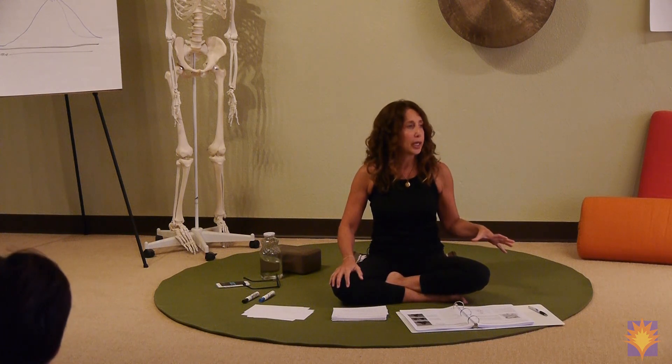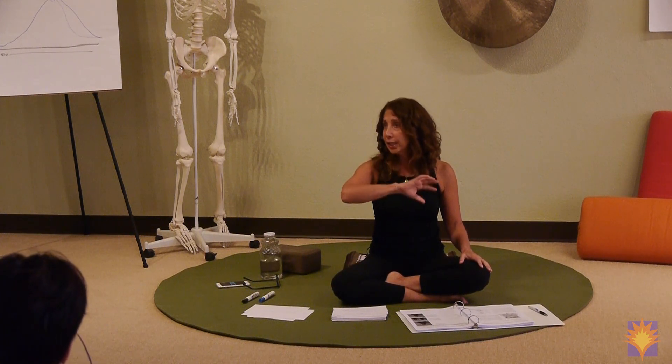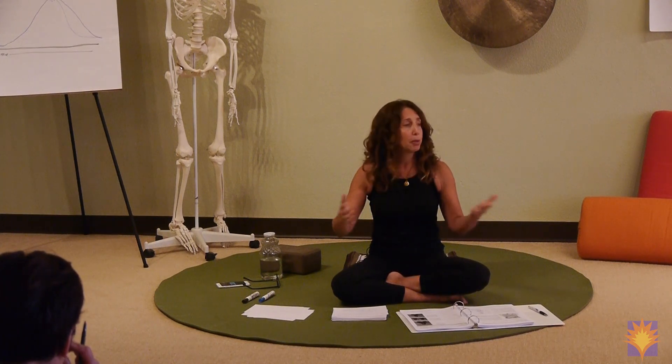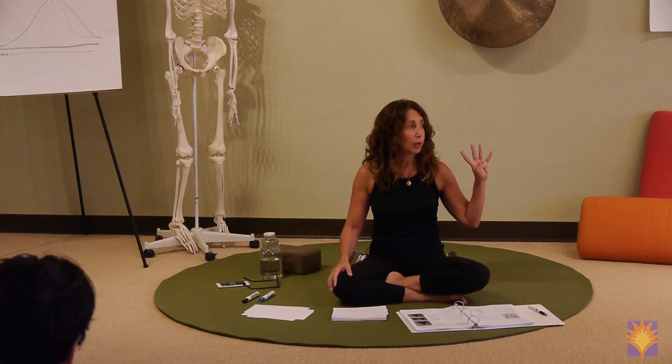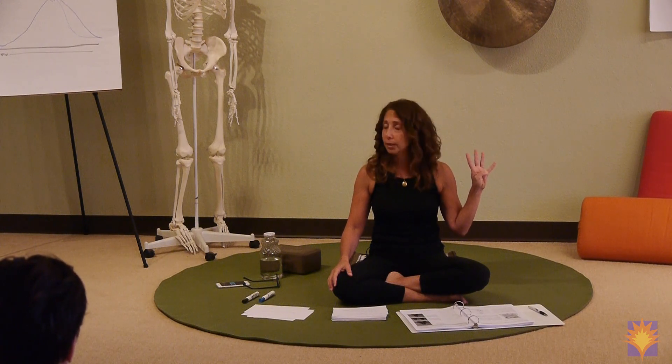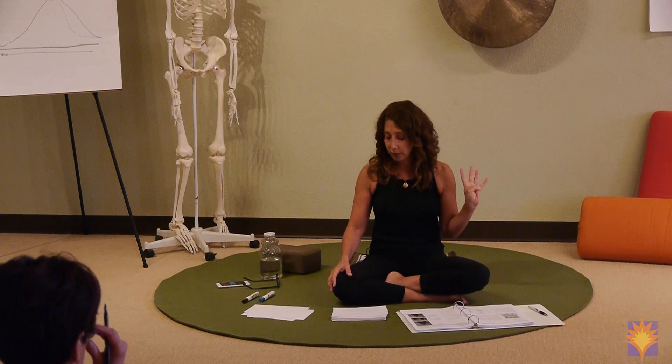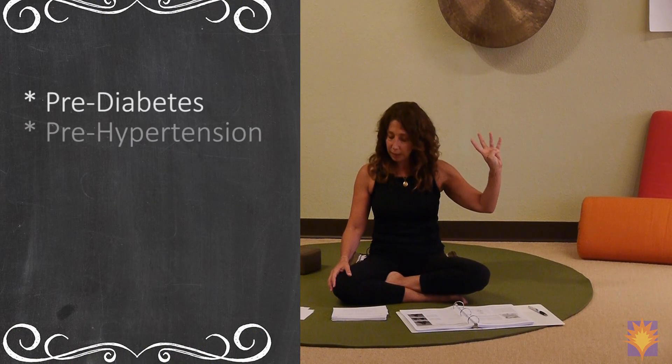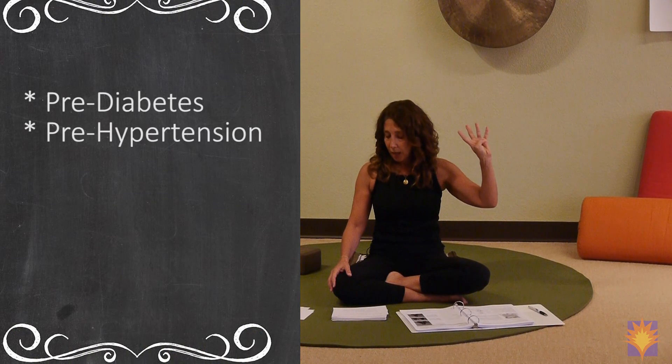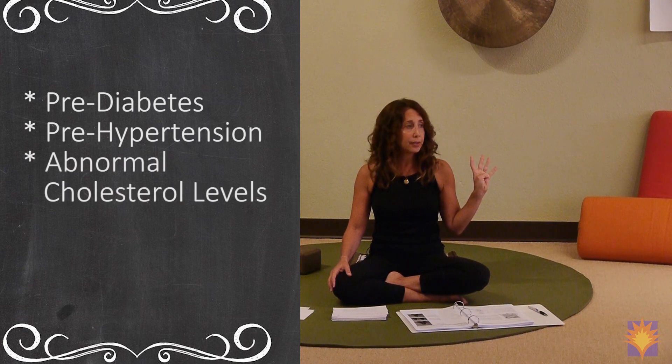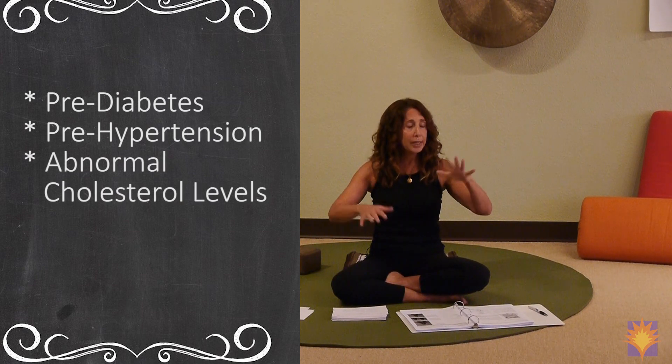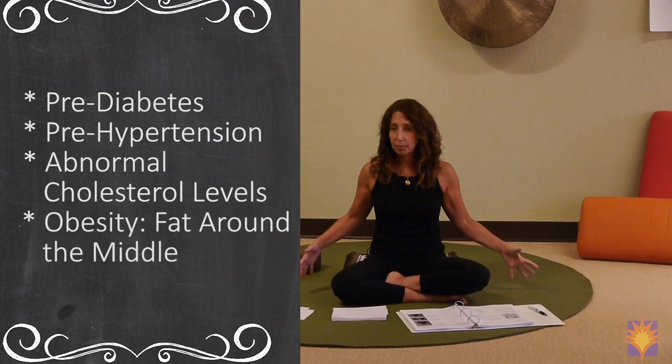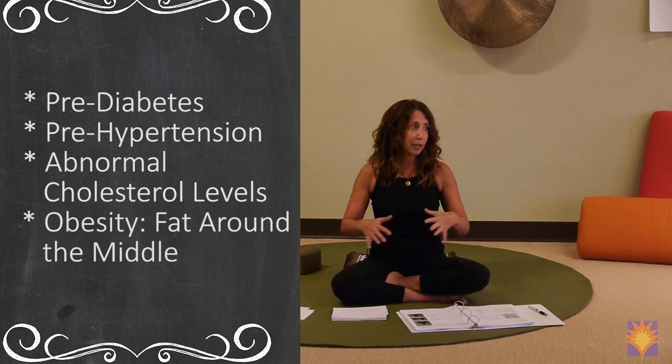So metabolic syndrome is diagnosed when, remember we said it's a bunch of stuff that happens in a predictable pattern. And that bunch of stuff is four things, and it's diagnosed when someone has three of these four things. Pre-diabetes, pre-hypertension, abnormal cholesterol levels, and obesity of the fat around the middle kind. Big hips are okay. Big belly, less healthy.